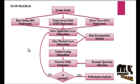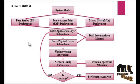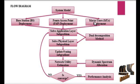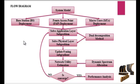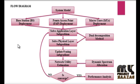Let us discuss the flow diagram of the product. Initially, in the system model, an OFDMA-based network architecture is considered, deployed with a base station, Femto Access Point, and macro user deployment. The operator allocates spectrum resources to the FAP using these three deployments to achieve maximum network utility and throughput.